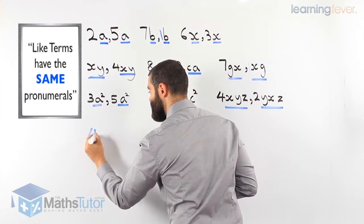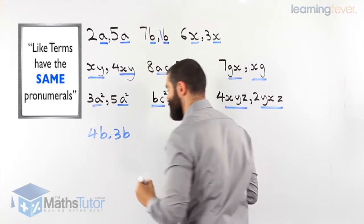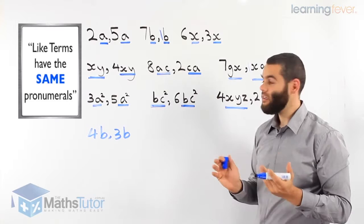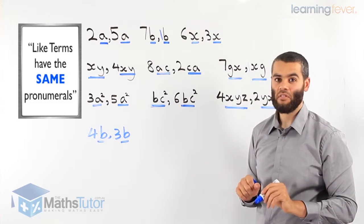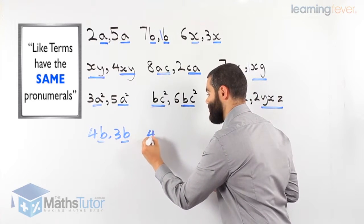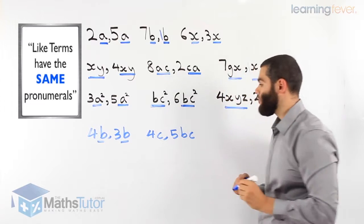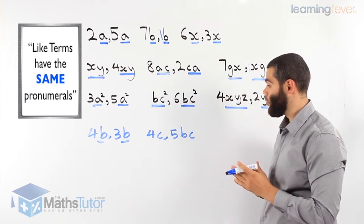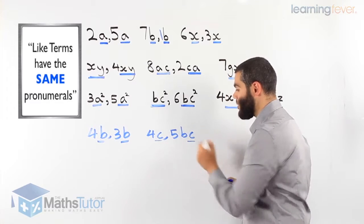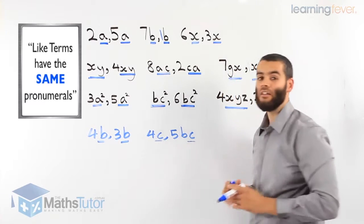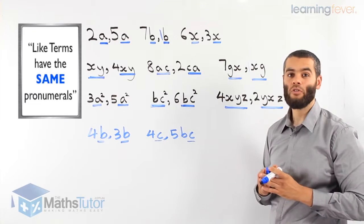We have 4b and 3b. Do they have the same pronumeral? Yes — then they are like terms. What about 4c and 5bc? We have a c here and a c here, but here we have a b and here we don't have a b. Therefore these are not like terms. They are both terms, but they are not like terms because the pronumerals are different.